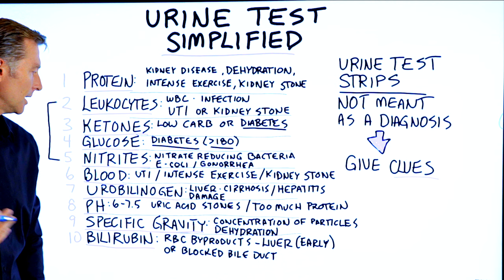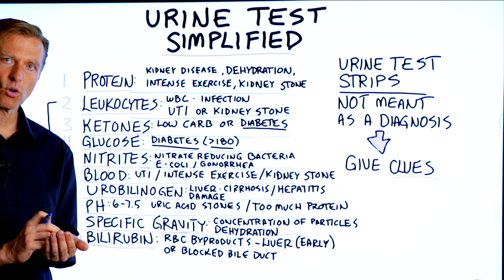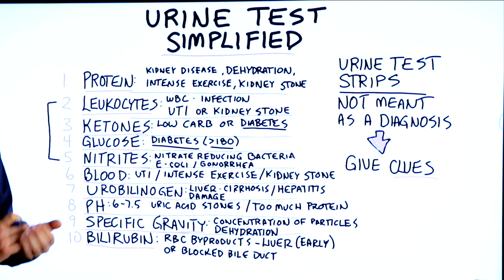Number nine is specific gravity. That's really just the concentration of particles in your urine — how concentrated your urine is — and that could indicate dehydration. When you look at these values, the test strip box will give you the normal ranges, whether low or high, right on the packaging.